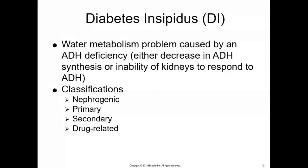There are different classifications of diabetes insipidus. Primary neurogenic DI is caused by a defect in the hypothalamus or pituitary gland resulting in a lack of ADH production and release. Secondary neurogenic DI results from tumors near the hypothalamus or pituitary, head trauma, infectious processes, brain surgery, or metastatic tumors. Nephrogenic DI occurs when ADH is present but the kidney does not respond to it. Drug-related DI is usually caused by lithium and demeclocycline.